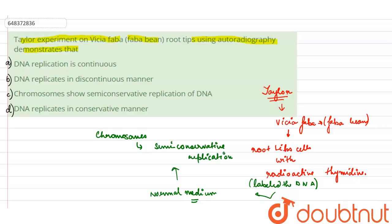Which is, when we look into our options, our correct answer is Option C that states chromosome shows semi-conservative replication of DNA.